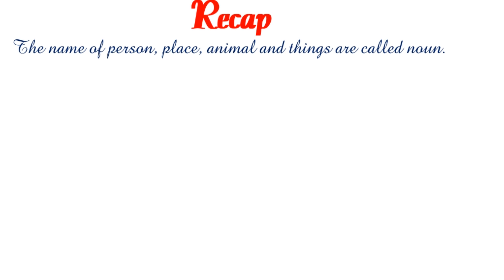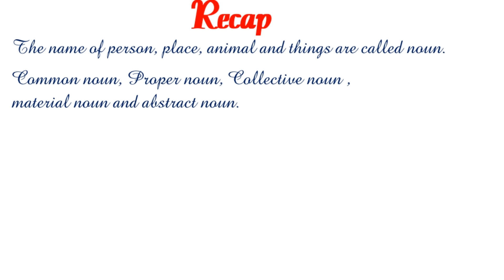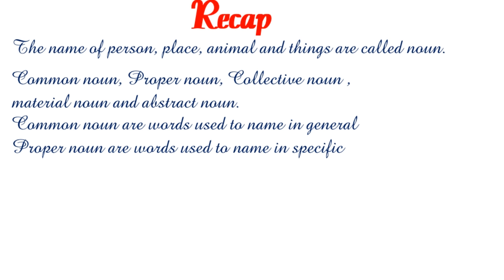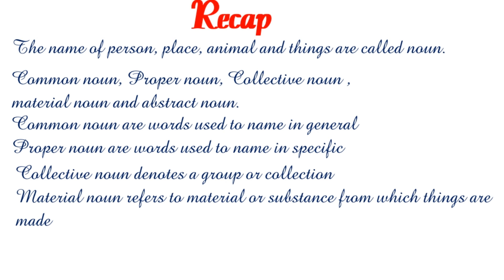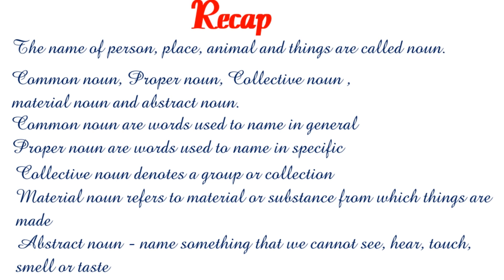Now let's see the recap. The names of a person, place, animal, or thing are called nouns. There are basically five kinds of noun: common noun, proper noun, collective noun, material noun, and abstract noun. Common nouns are words used to name in general. Proper nouns are words used to name something specific. Collective nouns denote a group or collection. Material noun refers to a material or substance from which things are made.